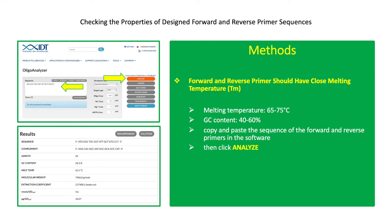Check the properties of the forward and reverse primers. Make sure the forward and reverse primer melting temperatures are similar or close to each other so they can work at the same annealing temperature during PCR. At least 5 degrees difference between the forward and reverse primer melting temperatures is ideal. Melting temperature should be within the range of 65 to 75 degrees Celsius. GC content influences the melting temperature — the higher the GC content, the higher the melting temperature. Find primer sequences with 40% to 60% GC content.